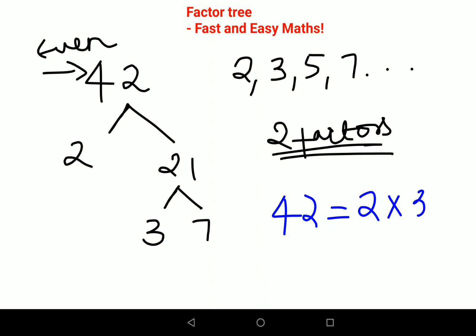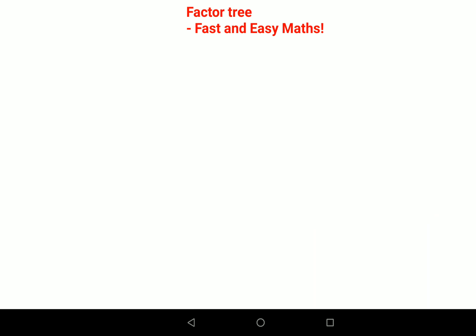But what about if I give you a different number, let's say 24? This is a smaller number, but I'm going to show you my trick with this. Now this again, the traditional method is 2, then 12, then 2, then 6, and then 2 and 3.